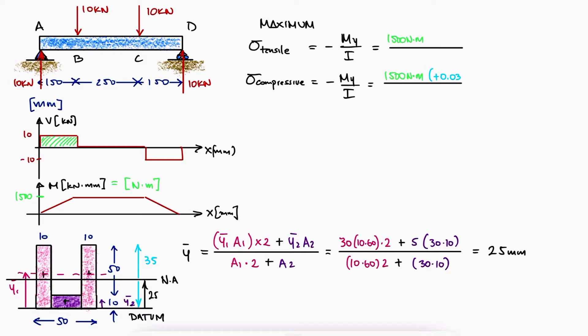Which means that Y equal to 35 mm will result in a compressive stress. And therefore, Y equal to minus 25 mm will result in a tensile stress, which is the bottom of the beam, which is clearly under tension.